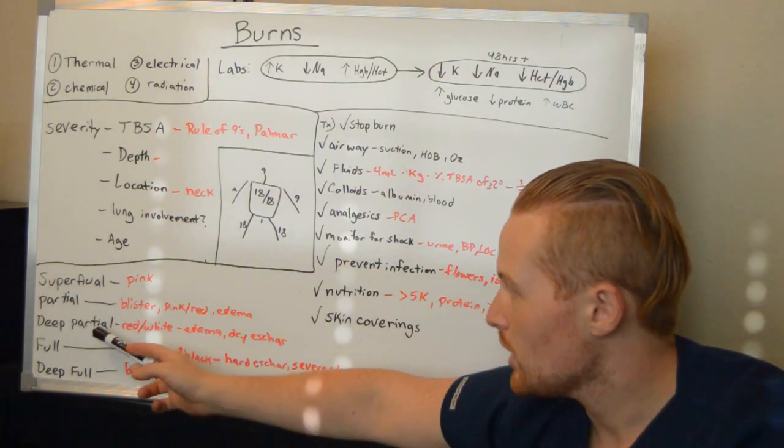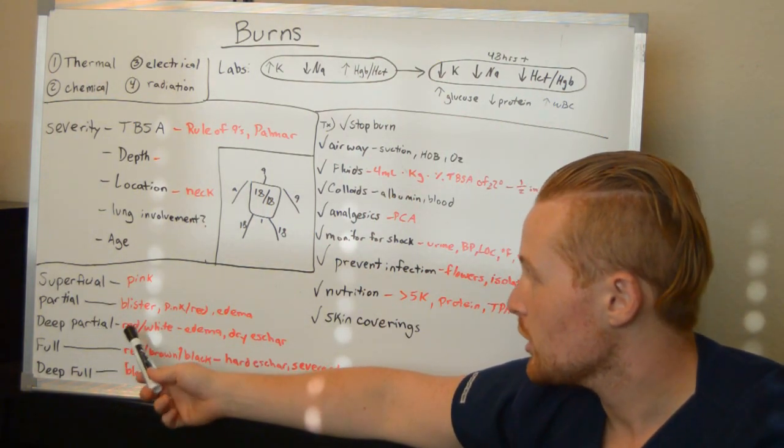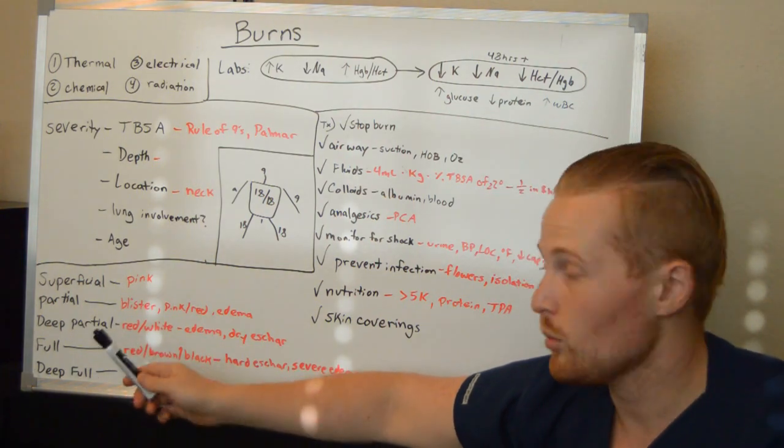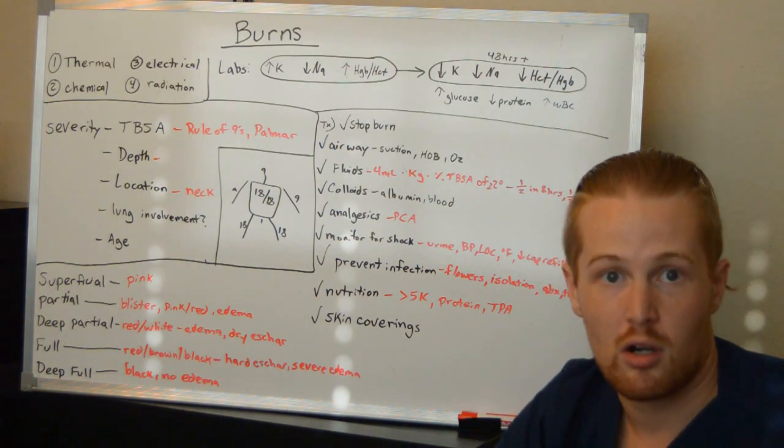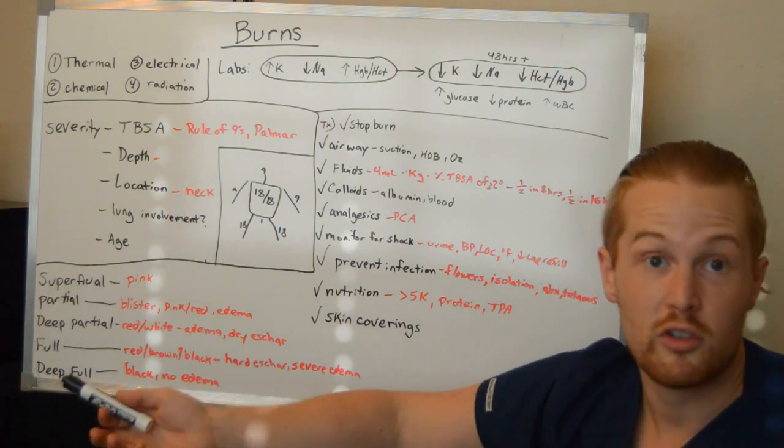When you get to the third degree and the deep partial burn, it's definitely going to be at least red, ranging all the way up to white, lots of edema, and you're going to start seeing eschar developing on the arm or the skin.